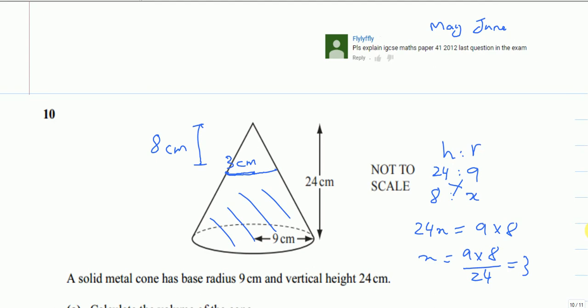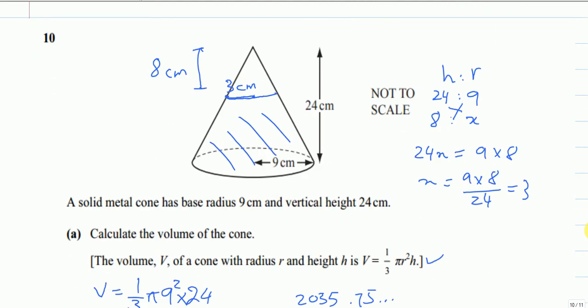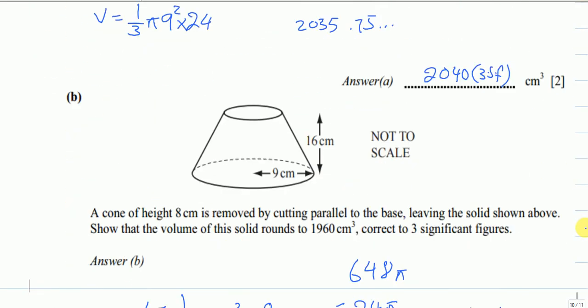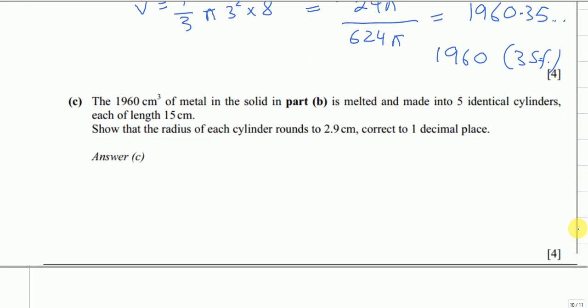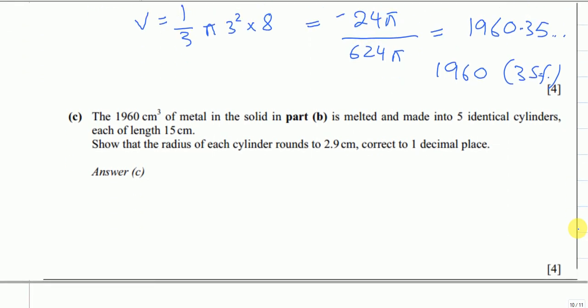The 1960 cm³ of metal from part b is melted and made into five identical cylinders.